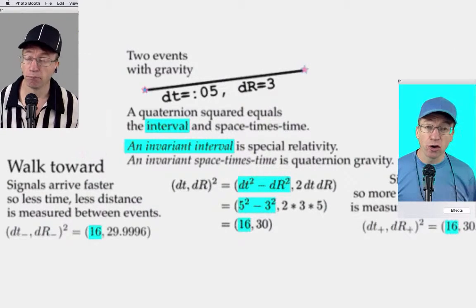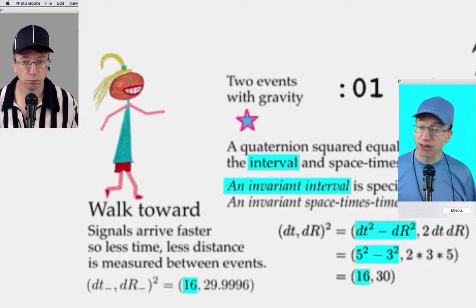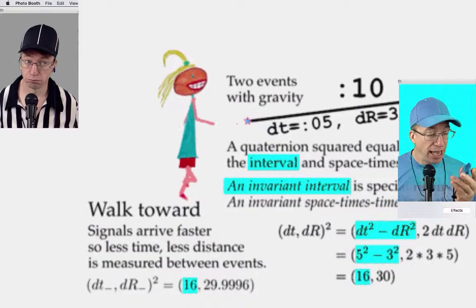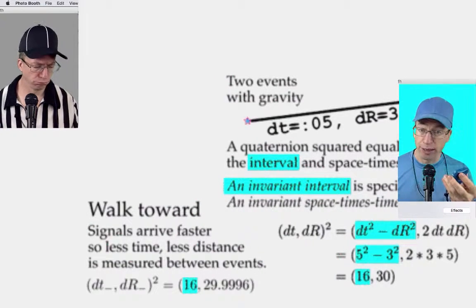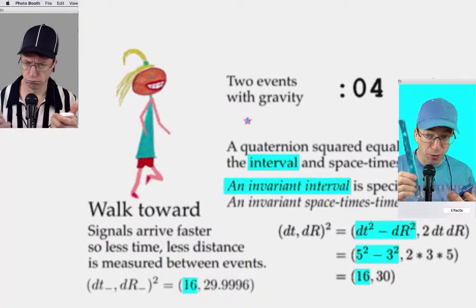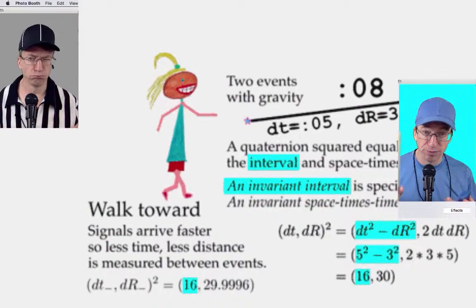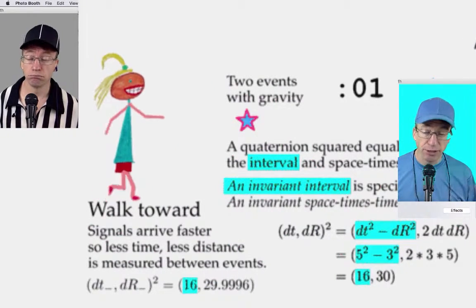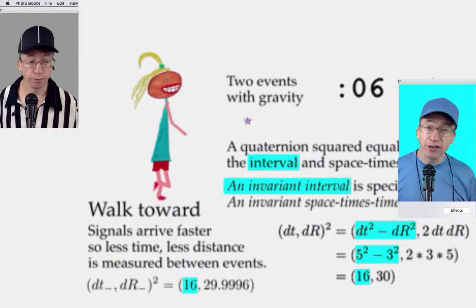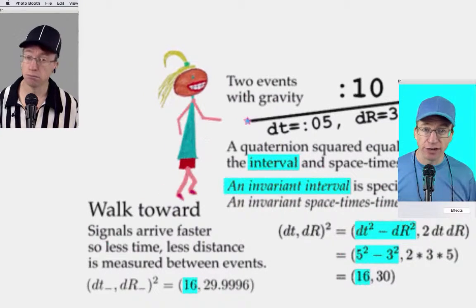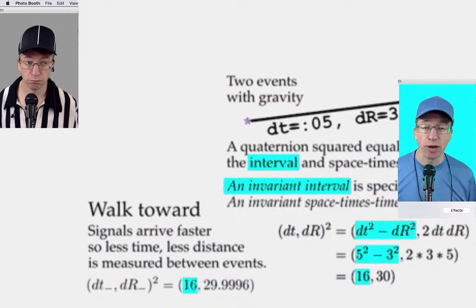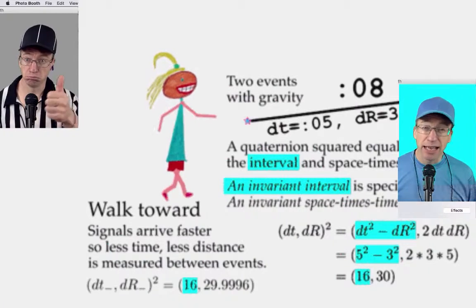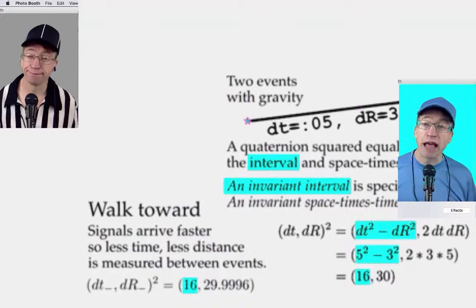Let's focus on that girl who's walking towards the events. She's going to get the news sooner about these explosions because she's going towards the action. That means her time dt is going to be a smaller number, and if she measures the distance between them with her ruler, it's going to be ever so slightly smaller. When we square that smaller dt and the smaller dr, the interval is exactly equal to the reference interval — that is how special relativity works. The space-times-time, made of a smaller time and smaller space, is going to be less than 30.